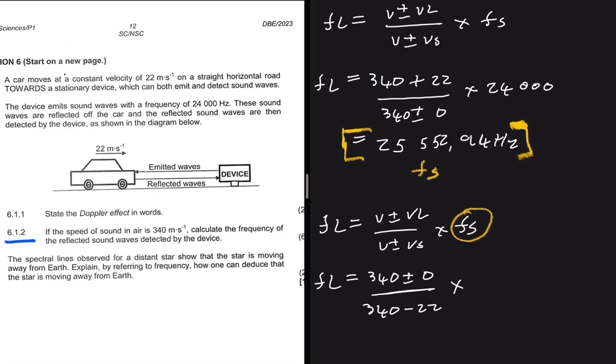Multiplied by the frequency of the source, which is what we calculated here: 25,552.94 hertz. That is the frequency that is being reflected by the car. This is the trick of the equation - as soon as you can wrap your head around the concept, then you're essentially done.